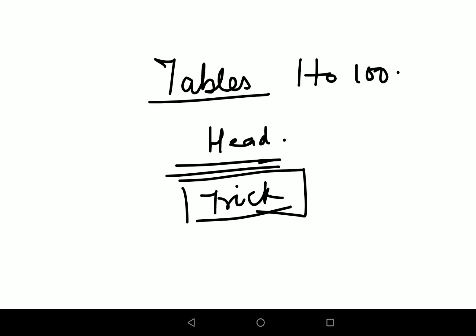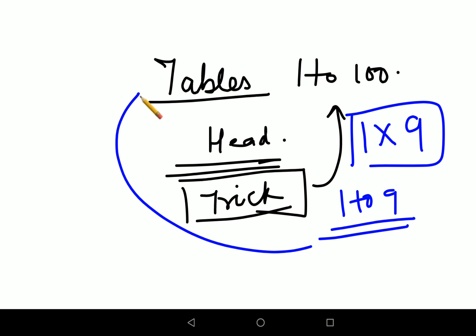Okay, and for this to work I'll tell you the basic requirements. Very basic requirements you need is you need to know tables from 1 to 9. You just need tables from 1 to 9 for you to know any number of multiplications from 1 to 100.